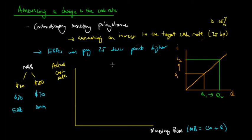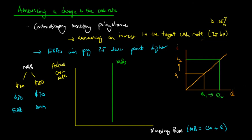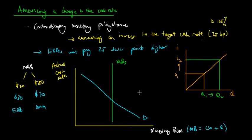Assuming the supply of money is controlled by the RBA, the supply curve is in fact a vertical line — the monetary base NBS is the same regardless of the cash rate, because the RBA controls the amount of money available independent of changes to the cash rate. The demand for securities or money by commercial banks is downward sloping, as demand is a negative function: as the cash rate decreases, the demand for money by commercial banks actually increases.